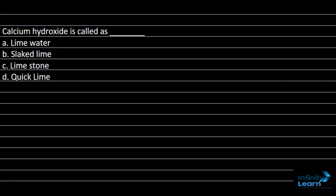Let me explain what exactly is calcium hydroxide. The formula of calcium hydroxide is Ca(OH)₂.